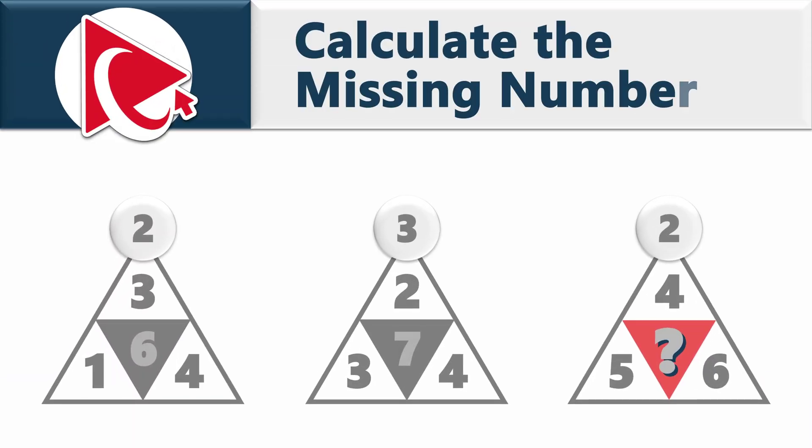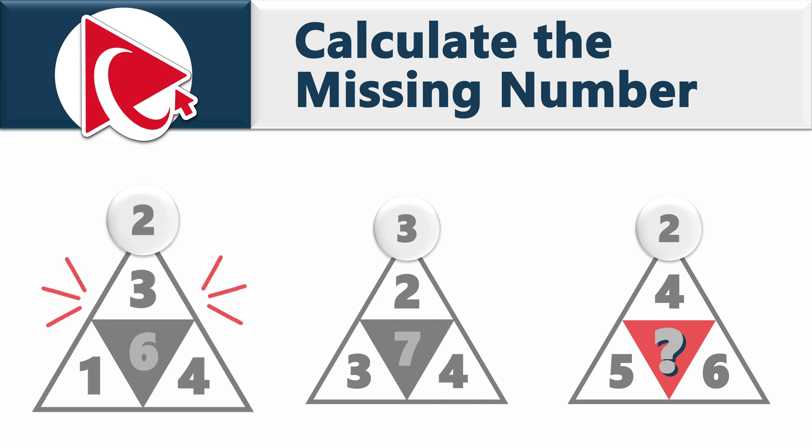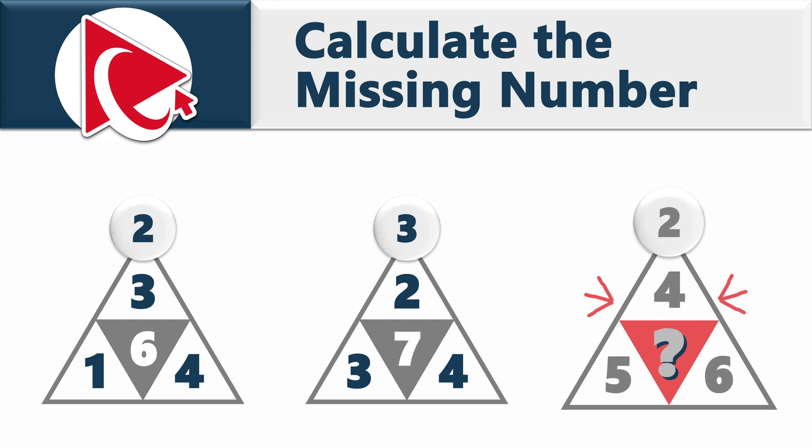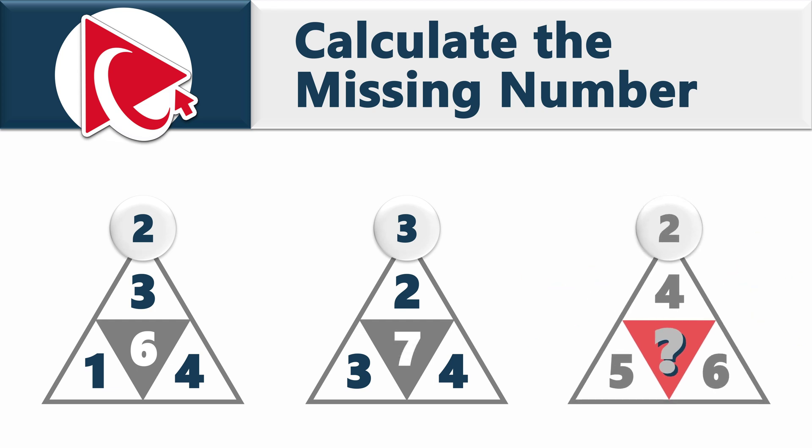You're presented with three cool looking triangles. Each triangle has four numbers inside and one number on the top in the circle. For the first triangle, the numbers inside are 1, 3, and 4, 2 on the top, and 6 in the middle inside the other shaded triangle. The second triangle has numbers 3, 2, and 4, number 3 on the top, and number 7 in the middle. And then the last, third triangle has numbers 5, 4, and 6, number 2 on the top, and the missing number in the middle.